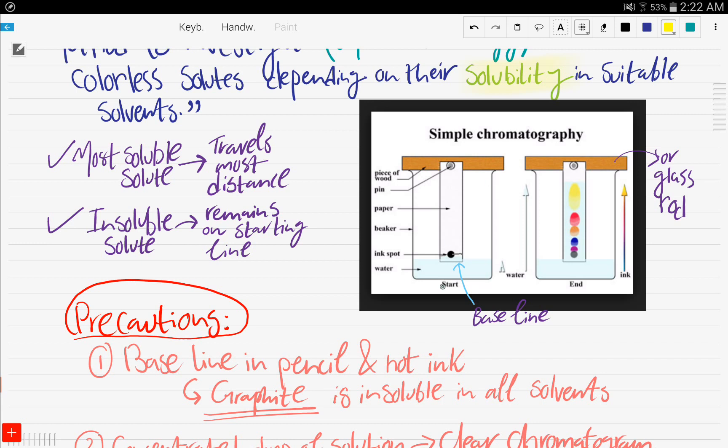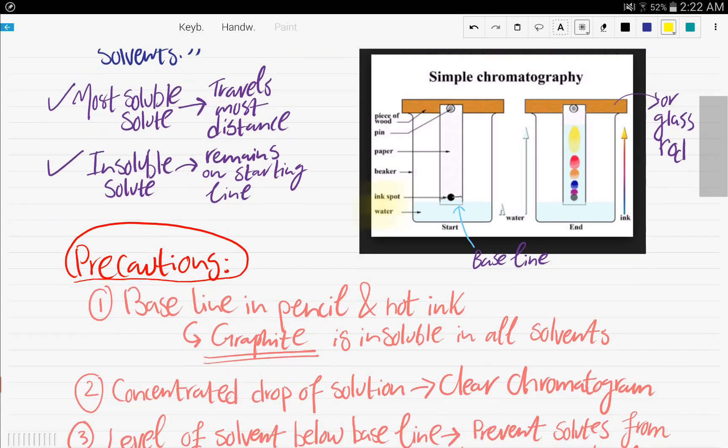So, we have the beaker, and then we have here, in this case, the solvent is water. The solute, in this case, is an ink spot, and you put the ink spot on the baseline, and this is the paper, and you have here a piece of wood and a pin to hold the paper.